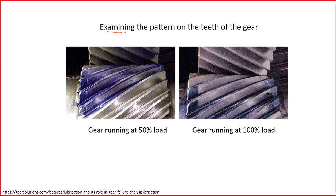These pictures show how to examine the contact pattern on gear teeth. We want to know if there is high contact stress at a localized area. Gears can be colored with a dye — there is a lacquer known as Dychem. You color the gears and run them at 25%, 50%, 75%, and 100% load. After running, the contact stress pattern becomes clear — at high-stress points the lacquer is removed, and in other areas it is not. This method reveals the stress distribution on gear teeth.